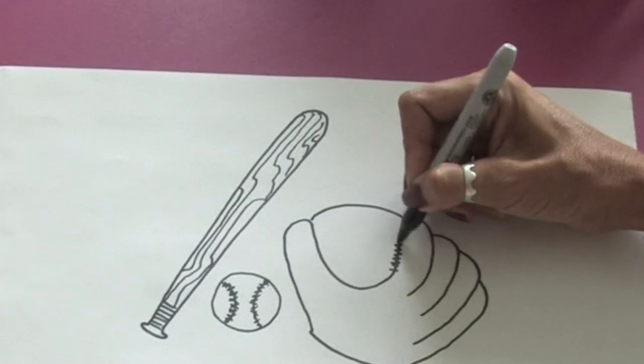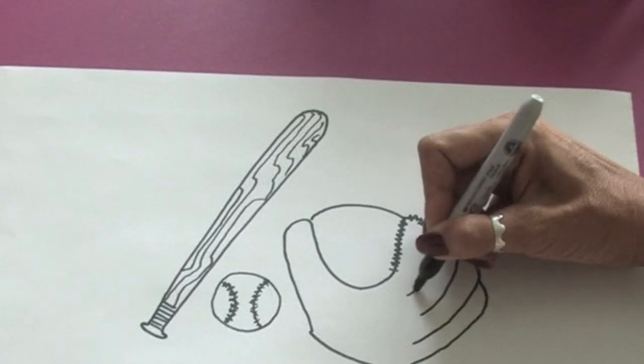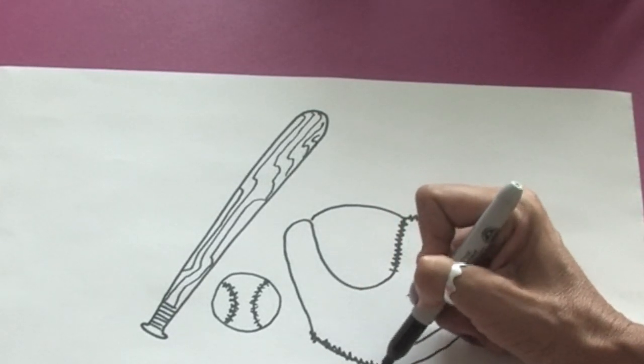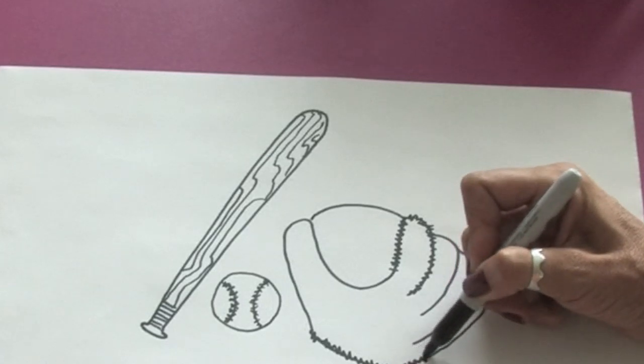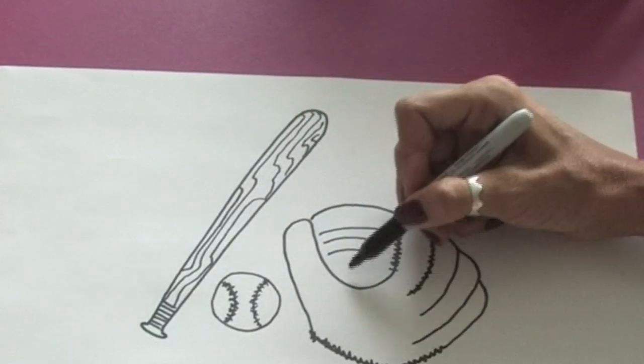And again, there's a lot of stitching on a baseball mitt. And you can just go around just like this, all around the lines. And you can get that detail in the mitt. And we can do the netting here.